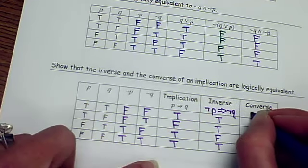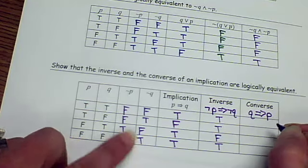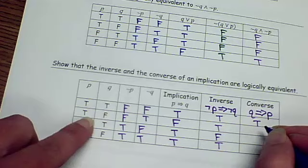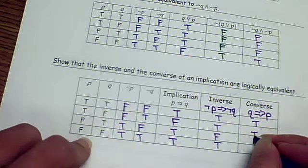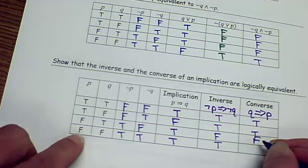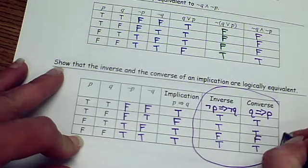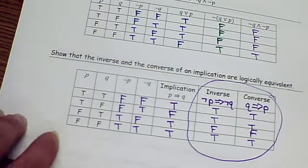Converse is when you flip. So if Q then P. True, true, good. False, true, we're good. True then false is the no-no. False, false is okay. These are equivalent. They have the same listing.